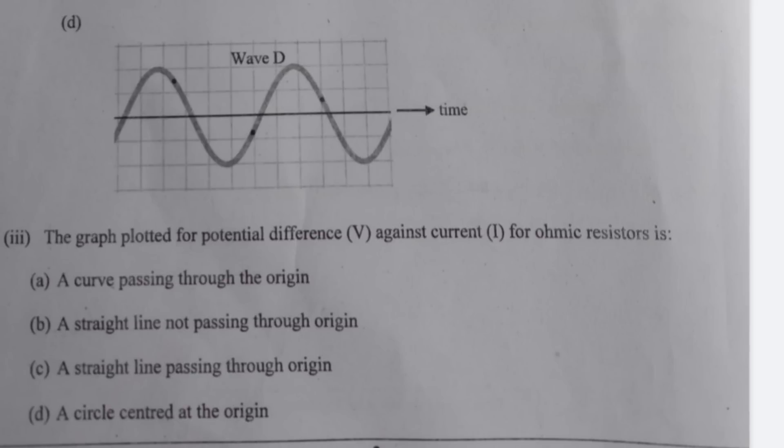The third one: the graph plotted for potential difference against current for ohmic resistors, the correct option is C, a straight line passing through origin.